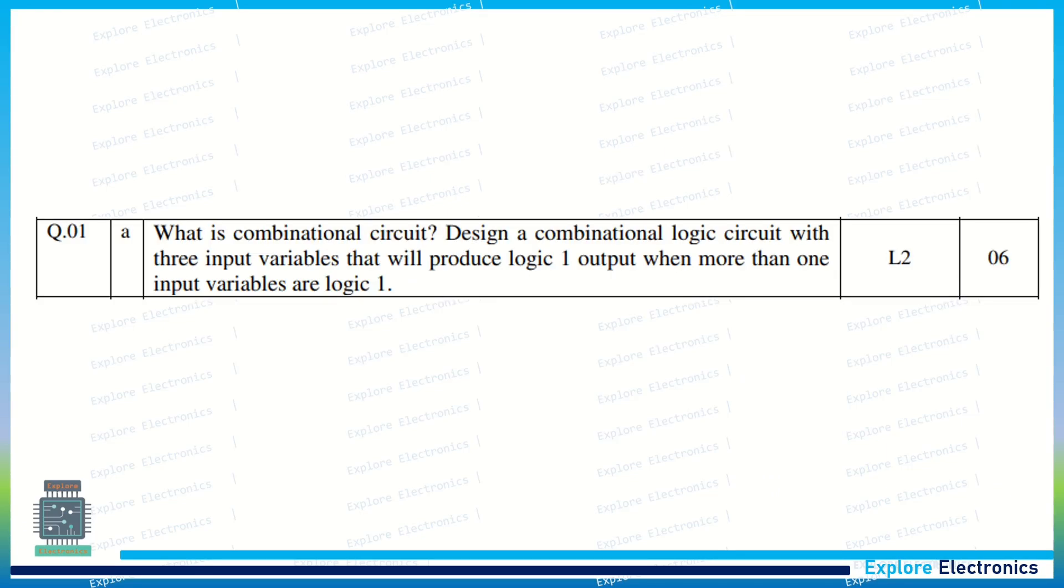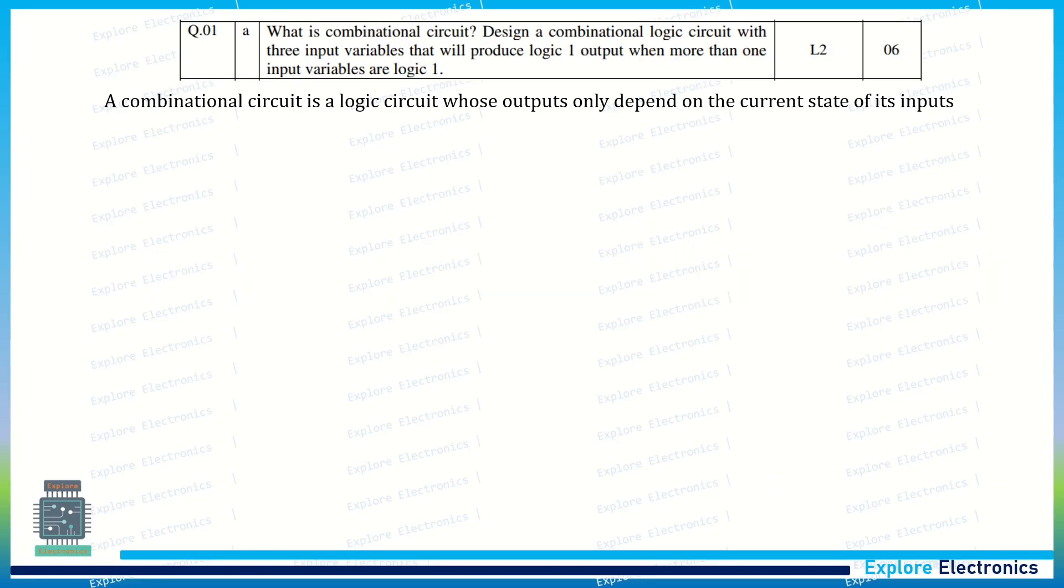In this question, we can see: What is combinational circuit? Design a combinational logic circuit with three input variables that will produce logic one output when more than one input variable is logic one. So first, we need to define combinational circuit.